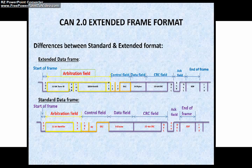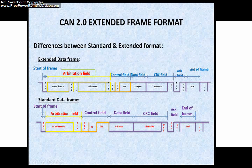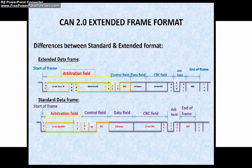The next bit is the SRR bit, which stands for substitute remote request. The SRR bit is recessive and is applicable only in the extended format of CAN — this bit does not exist in the standard format of CAN. It is transmitted in the extended frame at the position of the RTR bit, substituting the RTR bit of the standard frame.